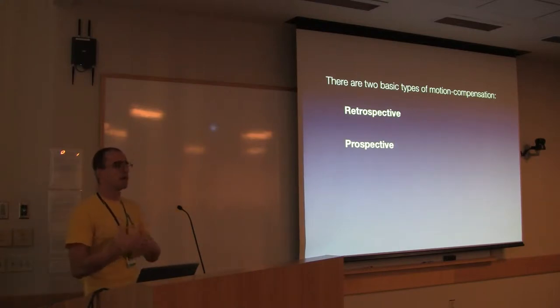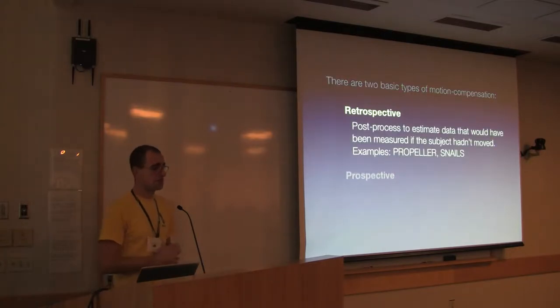I'm going to break these down into two very broad categories. One is retrospective motion compensation and the other is prospective motion compensation. In retrospective techniques, we post-process the motion damaged data. I do my six-minute scan, some of it's motion damaged, and I'm going to do post-processing to try and estimate what I would have measured if the subject hadn't moved. There's lots of methods for this with names like propeller, blades, snails. Basically what these techniques are doing is attempting a synthesis of the image you would have gotten. Invariably there's some tradeoff because you didn't actually acquire the right data.